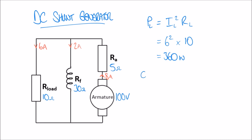The last thing to calculate is the efficiency of our generator, which is determined by comparing the output power to the input power: P_out over P_in. The output power is the power in the load resistor, PL, and the input power is the power produced in the armature, Pa. We multiply the result by 100 to express it as a percentage.